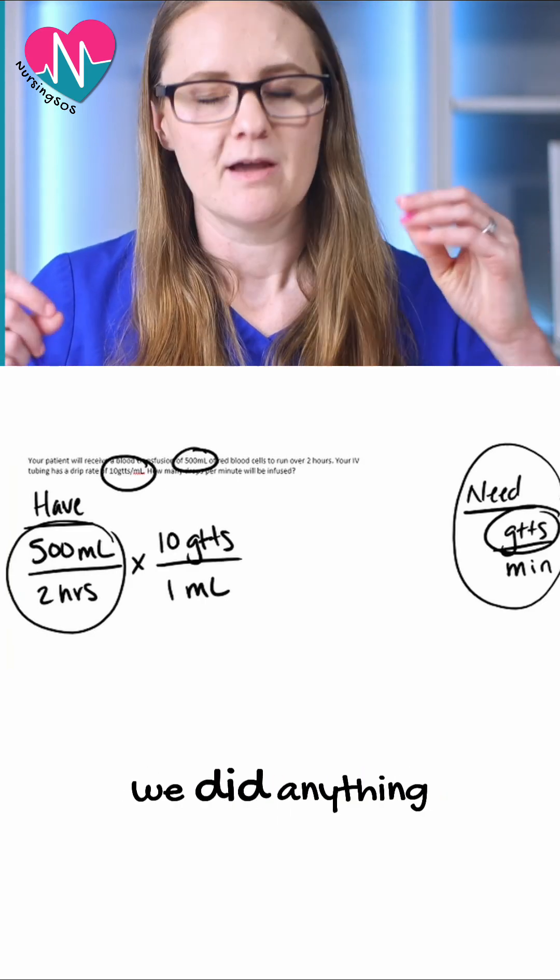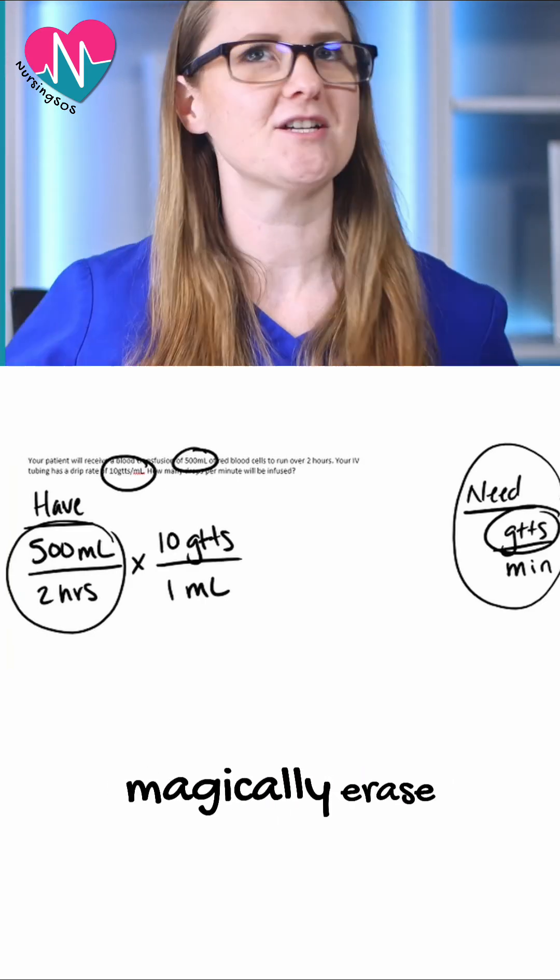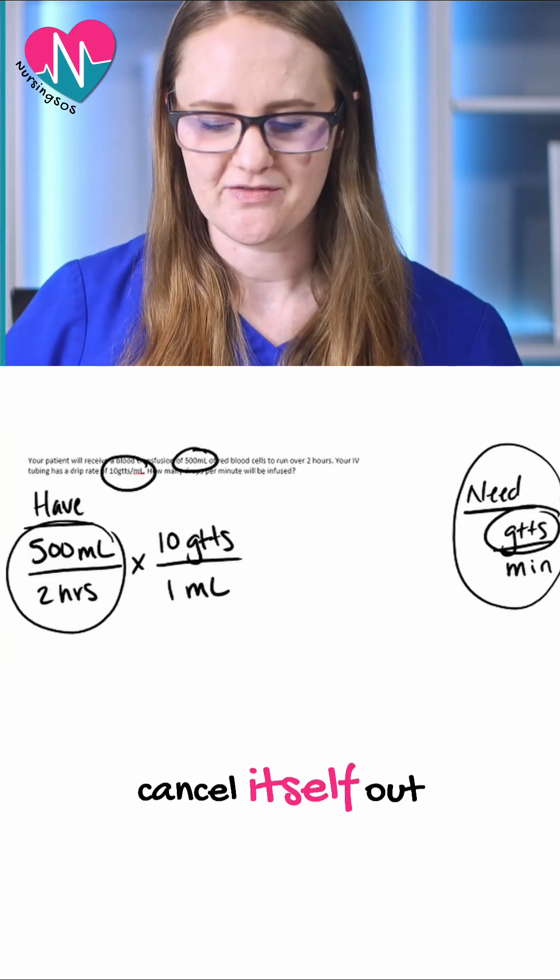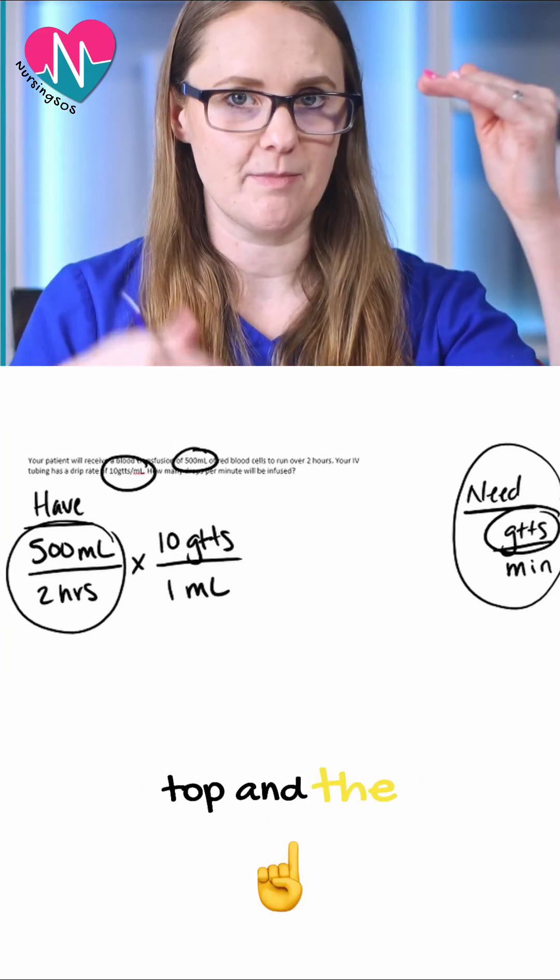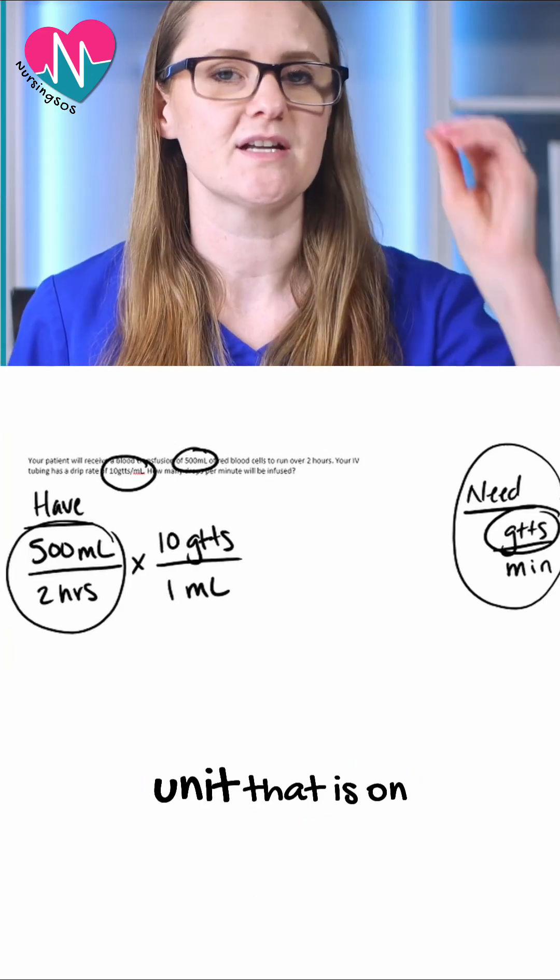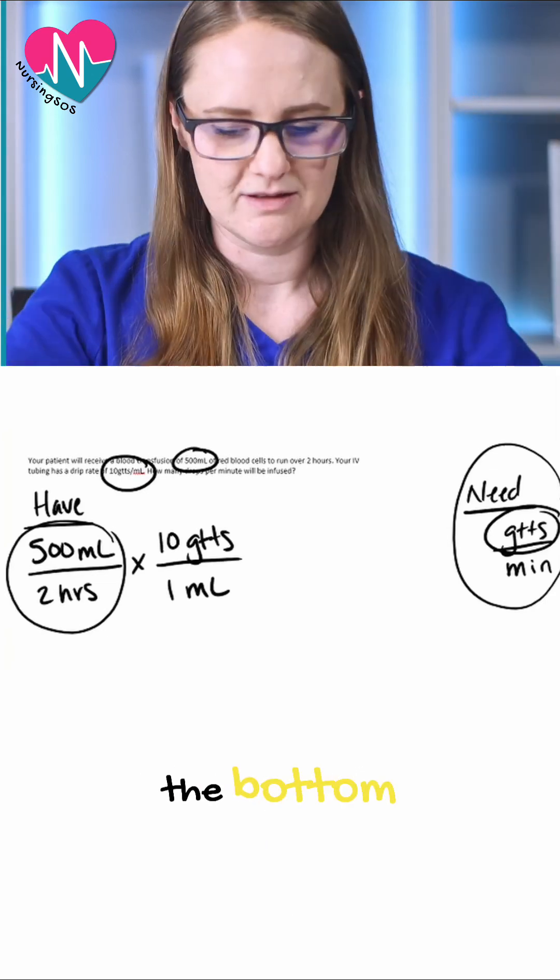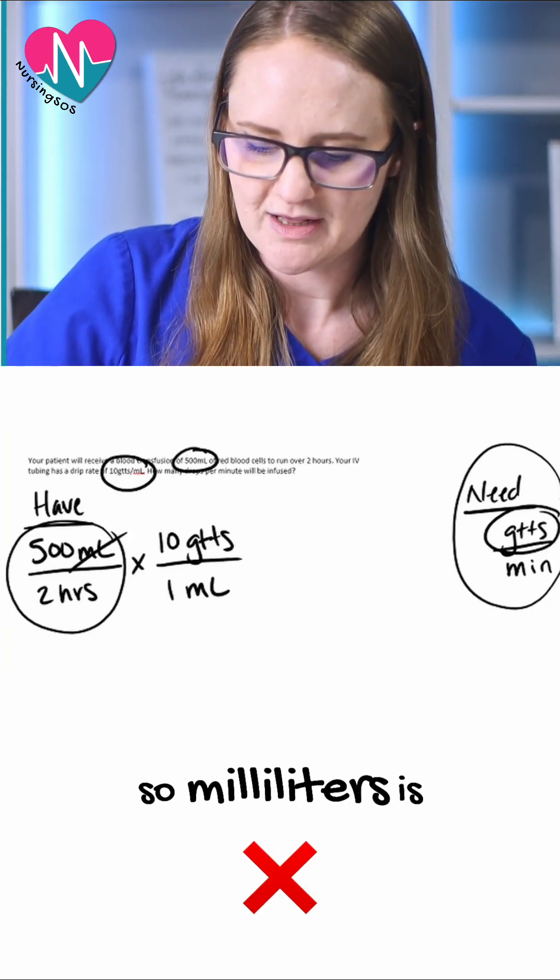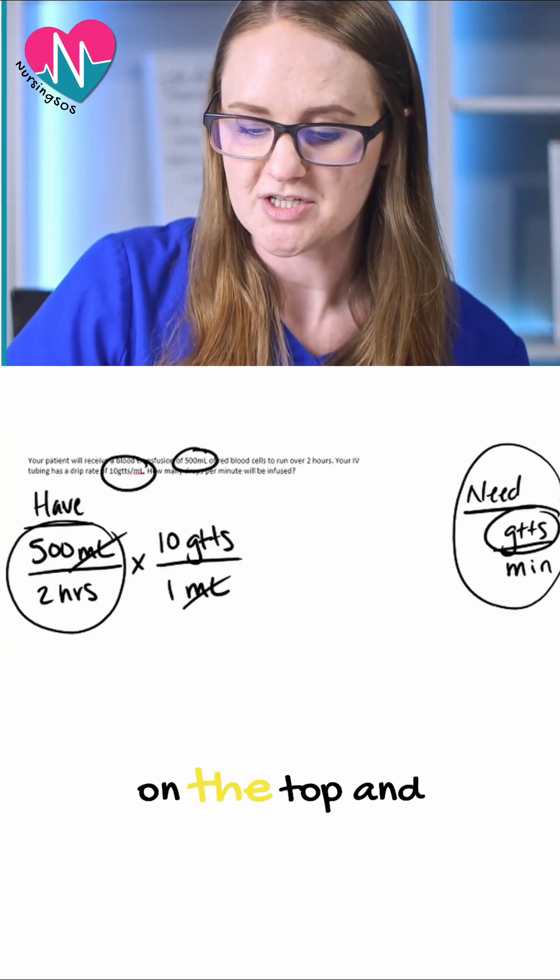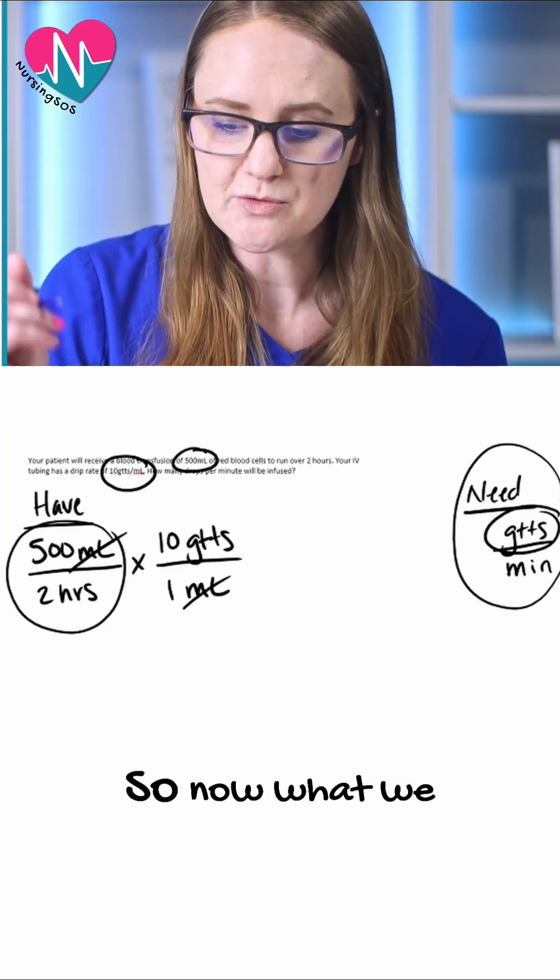Remember, like we said in the first problem we did, anything that we want to cancel out has to go on the top and the bottom. If you see a unit that is on the top and on the bottom, they get cancelled. So milliliters is cancelled because it is both on the top and on the bottom.